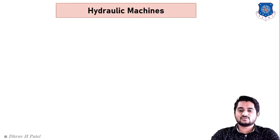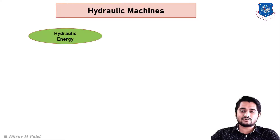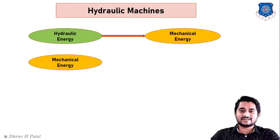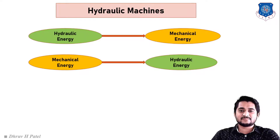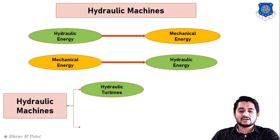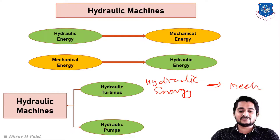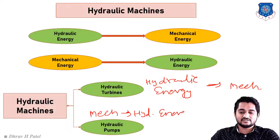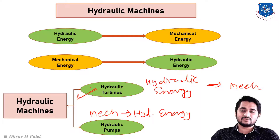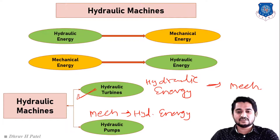First, what do we mean by hydraulic machines? Hydraulic machines are any type of machine that converts hydraulic energy to mechanical energy, or mechanical energy to hydraulic energy. There are two classifications: first, the hydraulic turbine, where hydraulic energy is converted into mechanical energy; and second, the hydraulic pump, where mechanical energy is converted into hydraulic energy. In the hydraulic turbine we can obtain power from water.